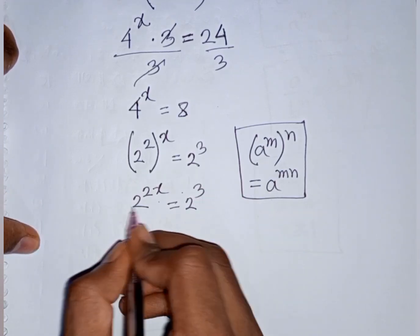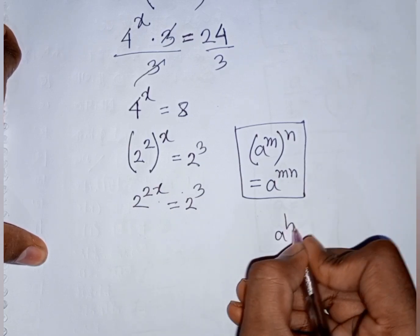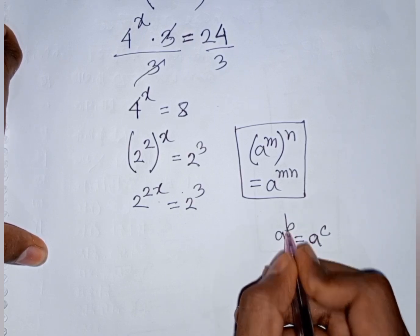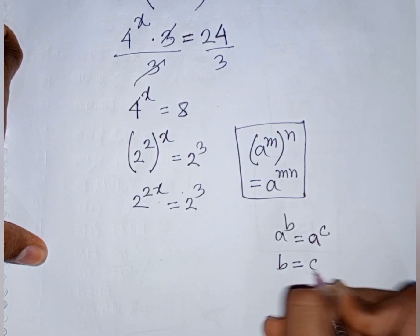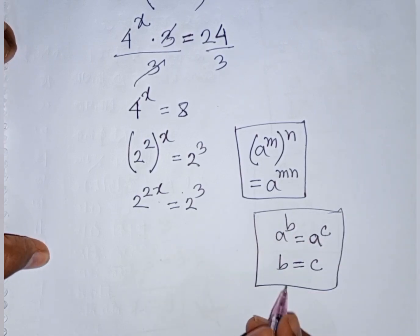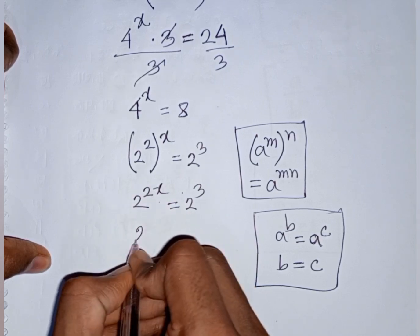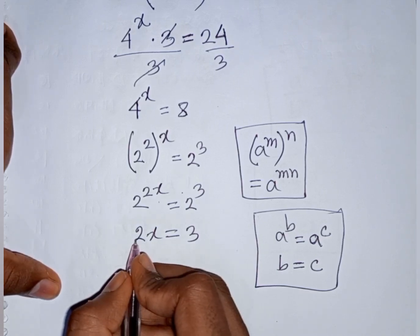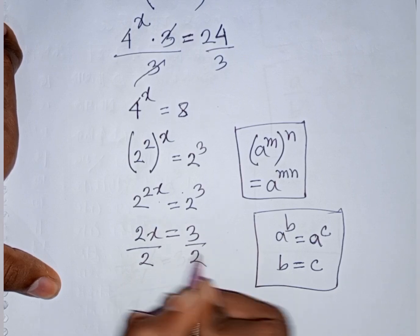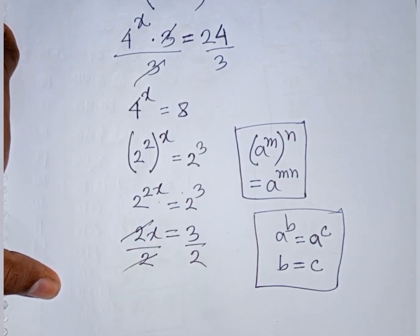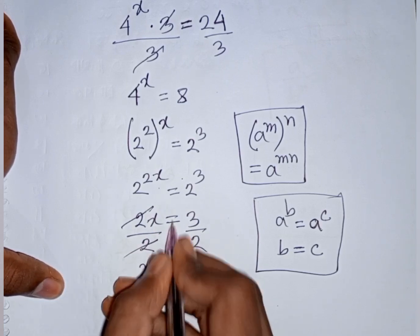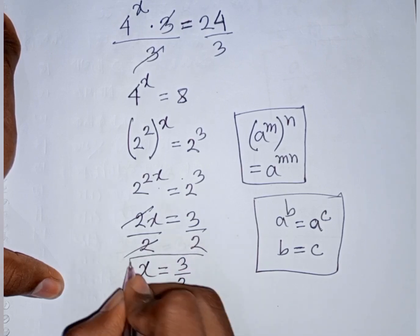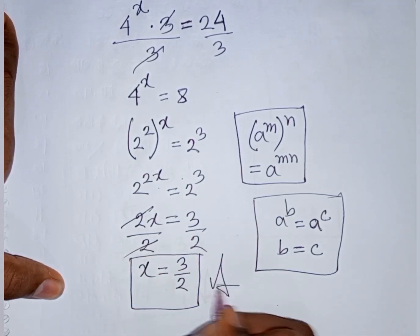Now we see base 2 is the same on both sides. Applying the rule that if a power b equals a power c then b equals c, the bases cancel and power equals power. So 2x equals 3. Dividing both sides by 2, this 2 will be cancelled. So the value of x equals 3 by 2. This is our final answer.